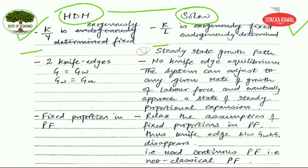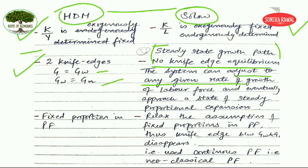The second difference is that the Harrod-Domar model has two knife-edge equilibria: first, when the actual growth rate equals the warranted growth rate, and second, when the warranted growth rate equals the natural growth rate. In the Solow model, there is no knife-edge equilibrium, because Solow concludes that the system follows a steady-state growth path and can adjust to any given rate of growth of the labor force.